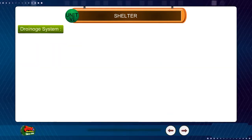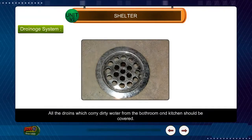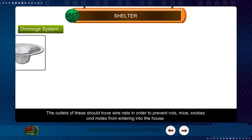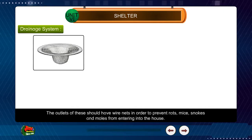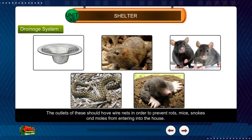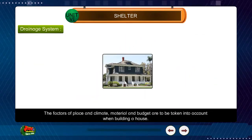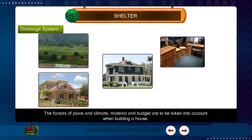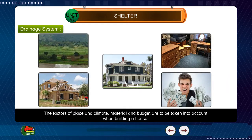Drainage System: All the drains which carry dirty water from the bathroom and kitchen should be covered. The outlets of these should have wire nets in order to prevent rats, mice, snakes and moles from entering into the house. The factors of place and climate, material and budget are to be taken into account when building a house.